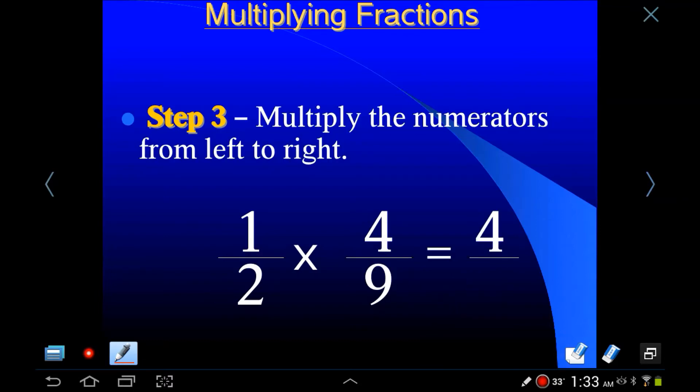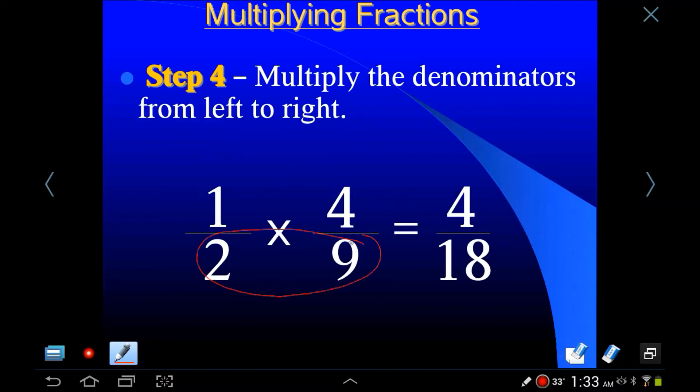So what do you do instead of an LCD? Well, you just multiply. That's all you got to do. Multiply left to right. That's it. What's 1 times 4? It's 4. Very simple. 2 times 9 is 18. There you have it. There's your answer. Kind of, sort of. But that's it, 4/18. What does that reduce to? Well, let's divide by 2. When you divide 4 and 18 by 2, you get 2/9. There you go. 2/9 is the answer.